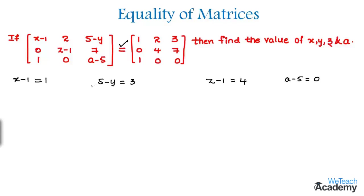And now in order to find the value of x, let us transfer 1 to the right hand side. We get x equal to 1 plus 1. And then by adding we get 2. So we get the value of x as 2.